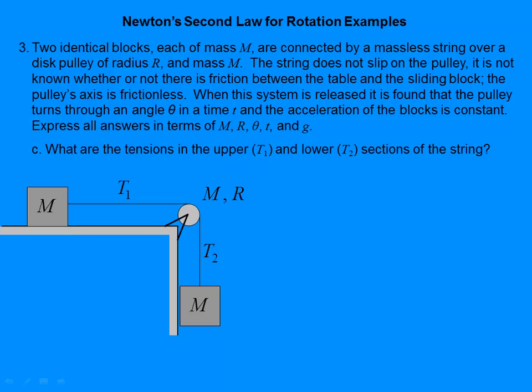Next we want to find T1 and T2, the tensions in the string. When we've used modified Atwood's machines before, we assumed the pulley was negligible, so there was just one tension. In this case the pulley is not negligible, so that's going to affect the comparison of the two tensions.